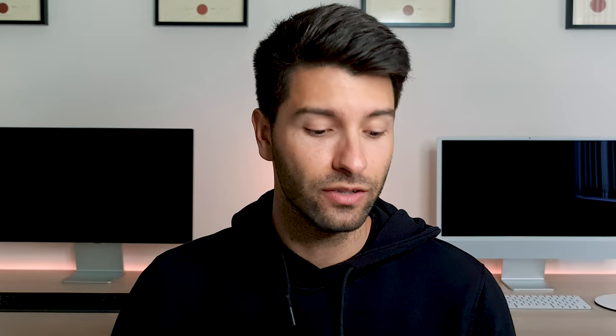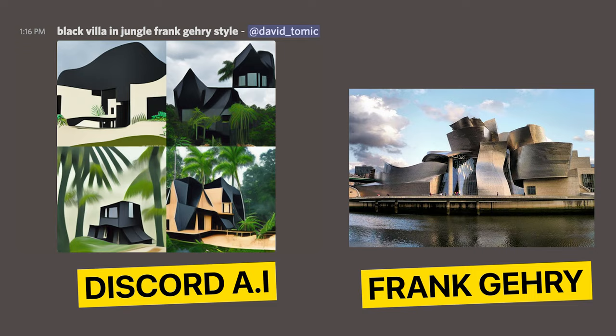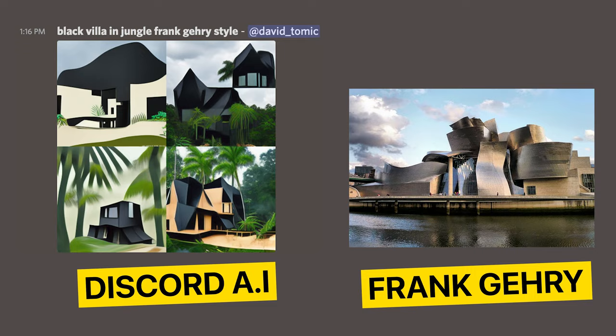Frank Gehry is known for his abstract forms, curves, and instantly recognizable designs. He is a one-of-a-kind architect, so when you ask the AI to replicate something in Frank Gehry's style, you can tell whether it actually produces his style. And not only was it able to produce one example — it gave me four straight away, and then I used a secondary AI software to give me another nine examples. Straight away, this was a great start to the experiment.